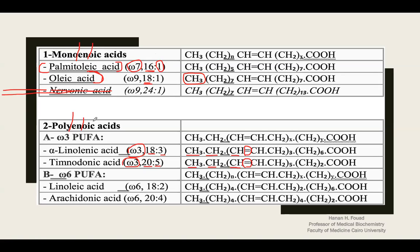We can have two, three, four, even five double bonds. Omega-3 and omega-6 are found in the pharmacy as capsules or tablets and are taken as drugs because they lower plasma cholesterol and help protect blood vessels against atherosclerosis.